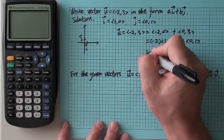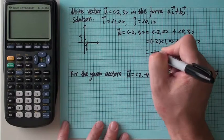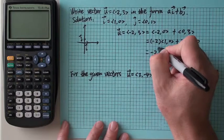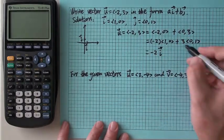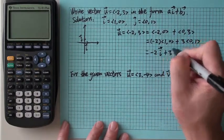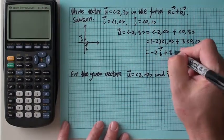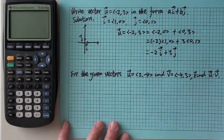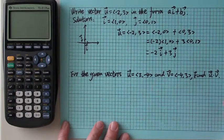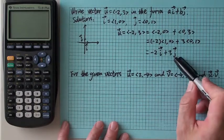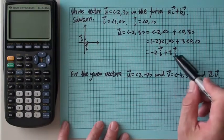So what you get is -2 times ⟨1, 0⟩ which is ī. Don't forget the arrow. And then 3ĵ. When you do the handwriting, you always want to put the arrow above the letter.